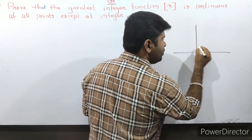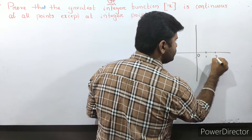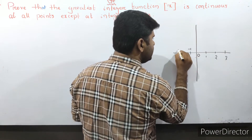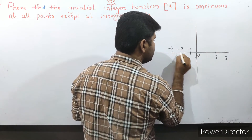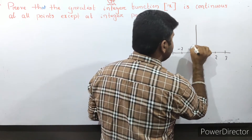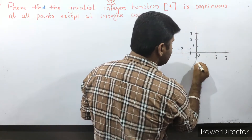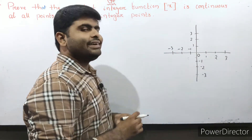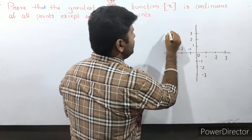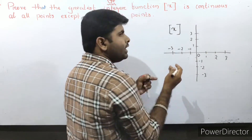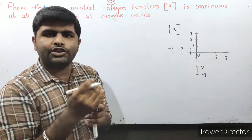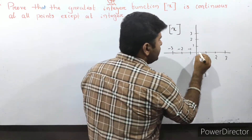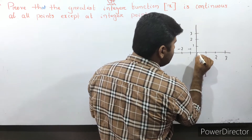On the number line we have points: 0, 1, 2, 3, and also negative values: minus 1, minus 2, minus 3. The greatest integer function gives the floor value — the greatest integer less than or equal to the input. For any x in the interval from one integer to the next, the function value stays constant.